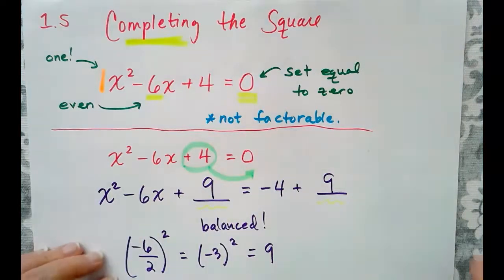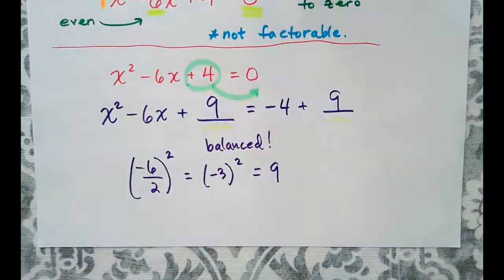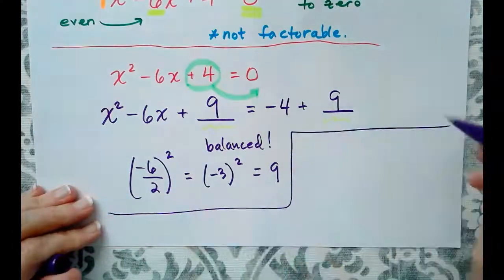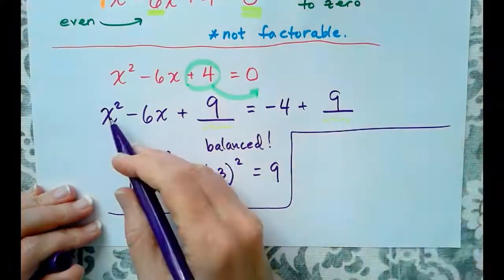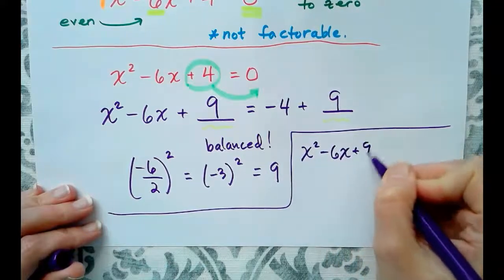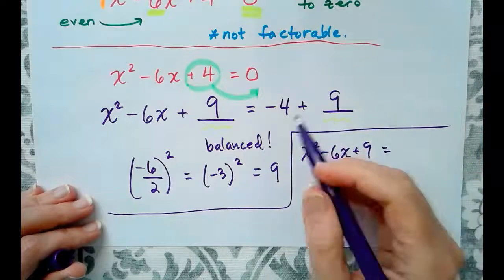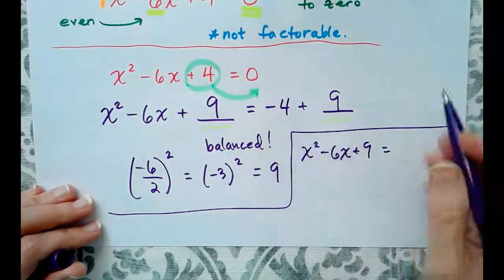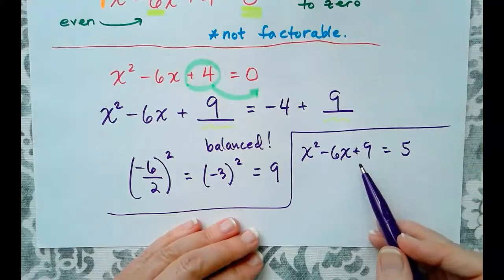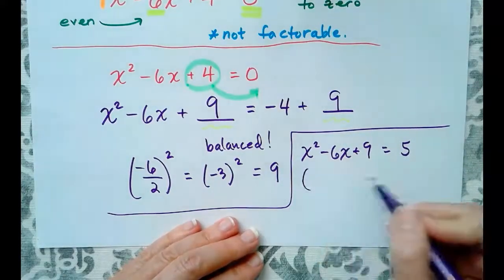Now, what this allows us to do, it allows us to now factor what remains. So let's take a look, and I will come right over here, and I'm going to take the x² - 6x + 9, just rewrite it here, and combine the like terms on the right-hand side. -4 + 9 is equal to 5. And we have created a perfect square trinomial that can now easily be factored.